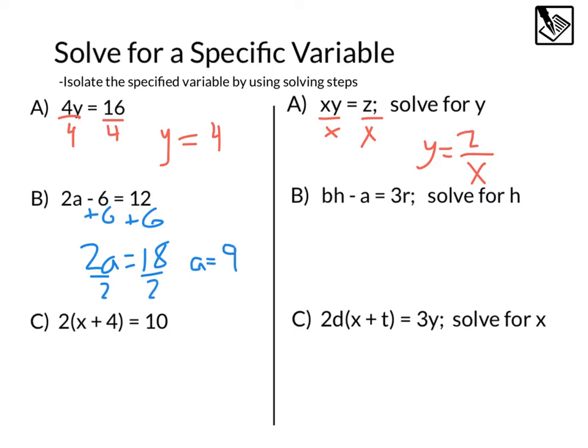When we have something with more variables, like instead of 2A, we have BH minus A equals 3R, and we want to solve for H. So this is the variable we're trying to get by itself. Just like we added 6 over here first, we're going to start by adding A. So we'll do plus A plus A. That's going to give me BH equals 3R plus A.